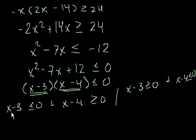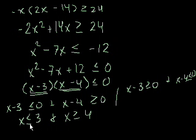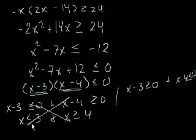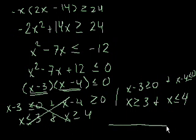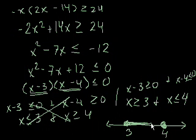Let's solve both cases. The first case says x is less than or equal to 3 and x is greater than or equal to 4. Can something be both less than or equal to 3 and greater than or equal to 4? No — so that case is impossible. The second case says x is greater than or equal to 3 and x is less than or equal to 4. That works — it just means x is between 3 and 4. On the number line, with filled-in endpoints, any number from 3 to 4 satisfies this inequality.